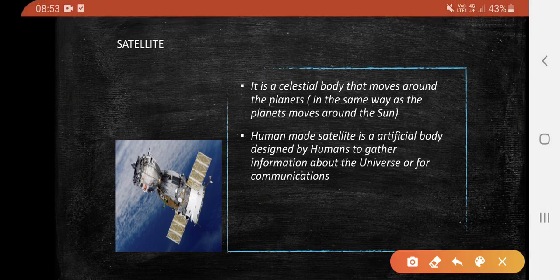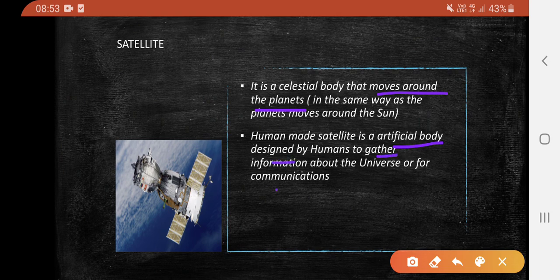A satellite is a celestial body that moves around the planets in the same way as the planets move around the sun. A human-made satellite is an artificial body designed by humans to gather information about the universe or for communications.